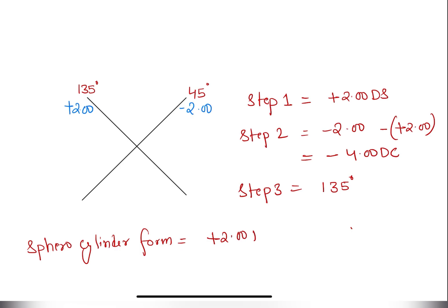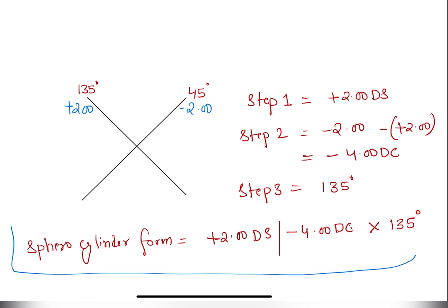Now we write this in sphero-cylindrical form: first the spherical power of plus two diopters found in step one, then the cylindrical power of minus four diopters from step two, and the axis at 135 degrees from step three. This is the sphero-cylindrical form of this optical cross.